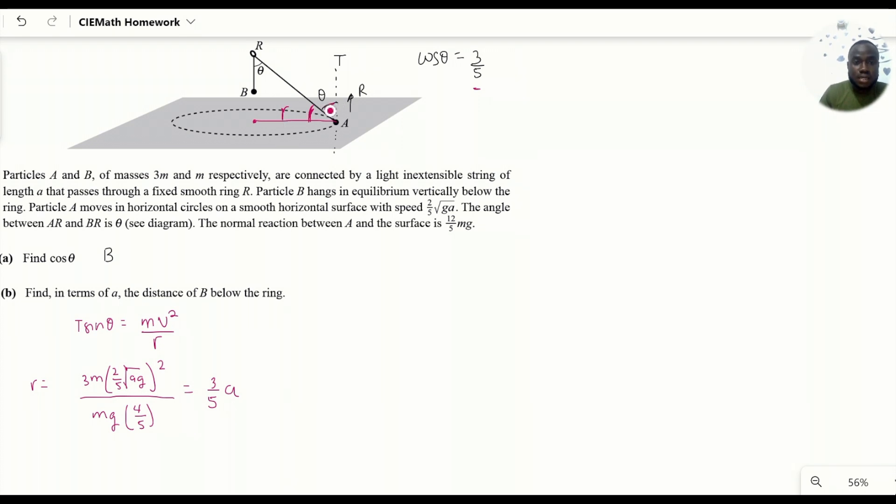Now when you take sine of this angle, you have opposite which is r over the hypotenuse which is AR. That would mean AR equals r over sine θ, which is (15ℓ/4)/(4/5), giving (3/4)ℓ. Now if AR from R to A is (3/4)ℓ and the whole length from A through R to B is ℓ, then BR, which is the distance of B below the ring, should just be ℓ/4.